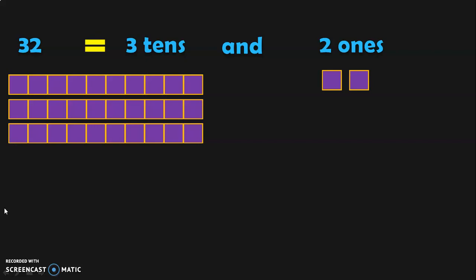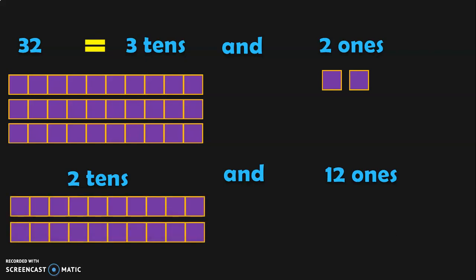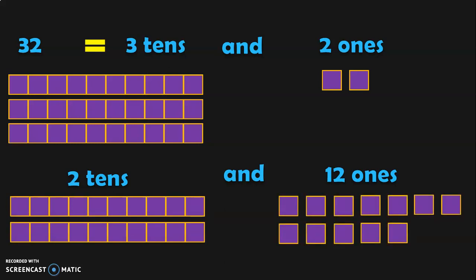Now we are going to regroup the tens. Three tens can be regrouped as two tens and ten ones. Take the ten ones to the ones place. In the ones place, we now have two ones plus ten ones, which is twelve ones. Let us represent this in the form of blocks: two tens and twelve ones. This concept is very important in subtraction because this is how you will be doing the regrouping or the borrowing process.